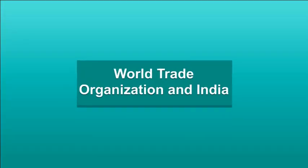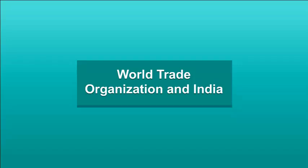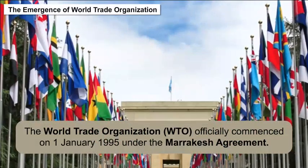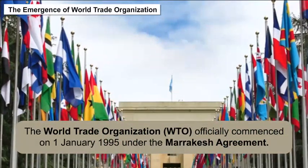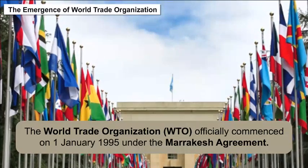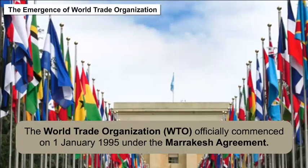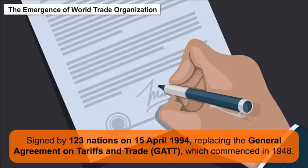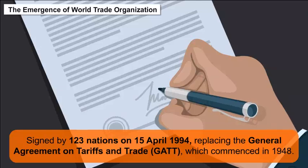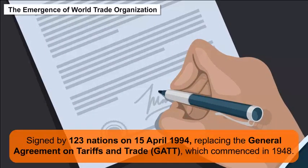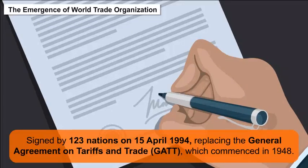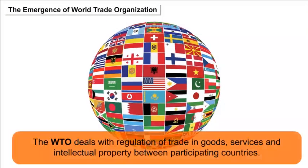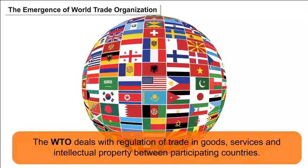World Trade Organization and India: The World Trade Organization (WTO) officially commenced on 1 January 1995 under the Marrakesh Agreement, signed by 123 nations on 15 April 1994, replacing the General Agreement on Tariffs and Trade (GATT), which commenced in 1948. It is the largest international economic organization in the world. The WTO deals with regulation of trade in goods, services, and intellectual property between participating countries.